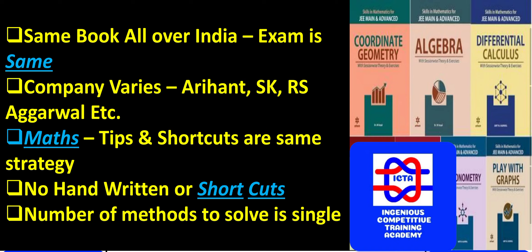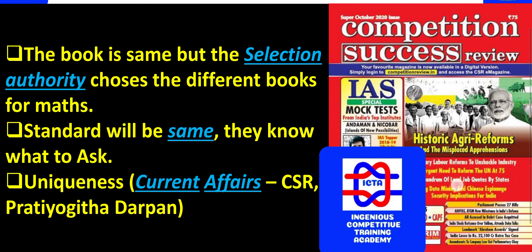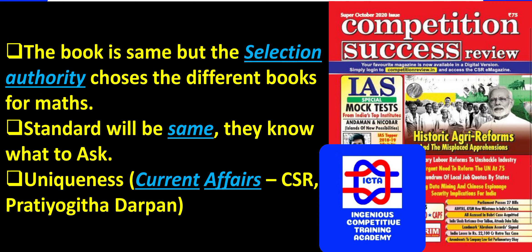In every exam we can see that whatever the market is providing — whatever shortcuts they have — you must have handwritten shortcut notes which will help you a lot. Here the pattern has changed. They take from competition magazines like Competition Success Review — this kind of monthly magazine is available in the library and from there they will pick up various questions. The selection authority decides on different books for each subject. These kinds of monthly magazines are also used for current affairs.